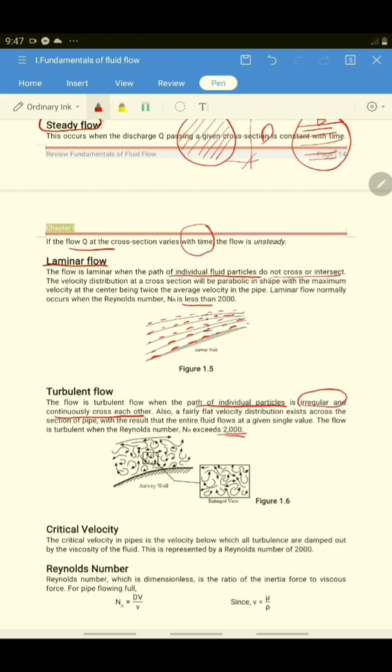The flow is turbulent when the Reynolds number exceeds 2,000. For laminar flow, if the Reynolds number is less than 2,000. So here, you can see that the fluid particles are very chaotic. They are disturbed.